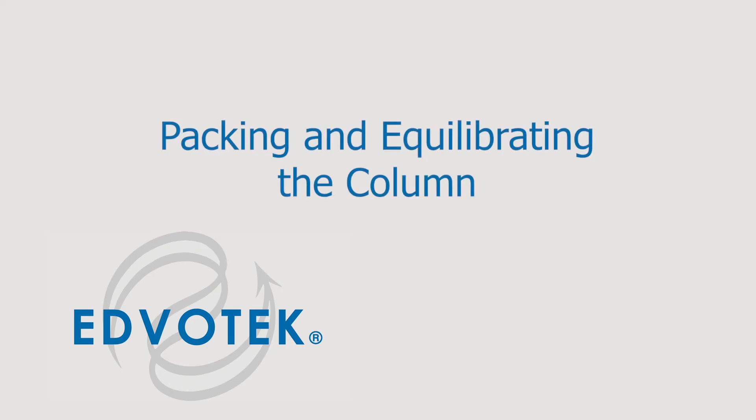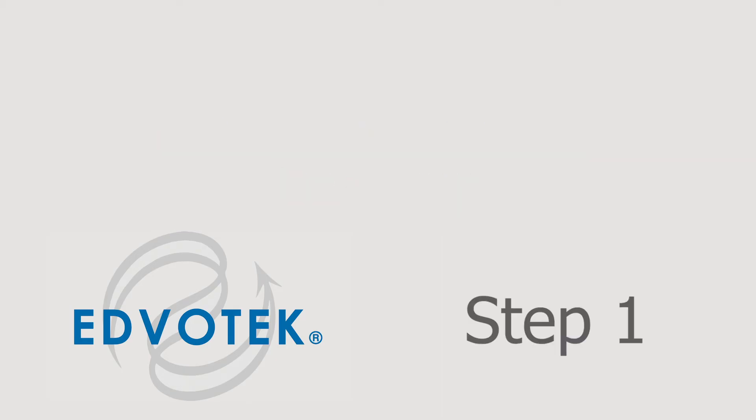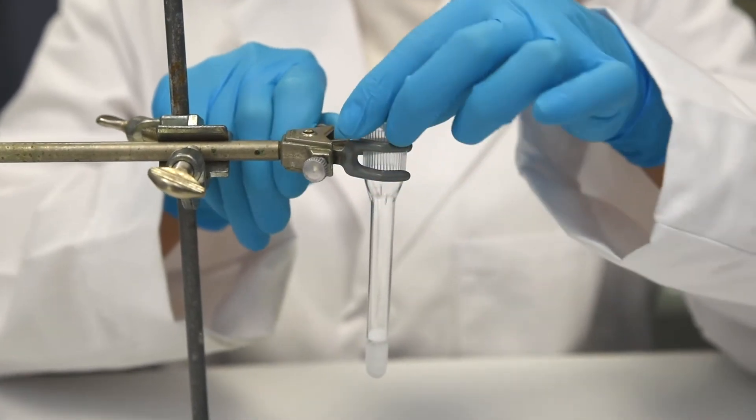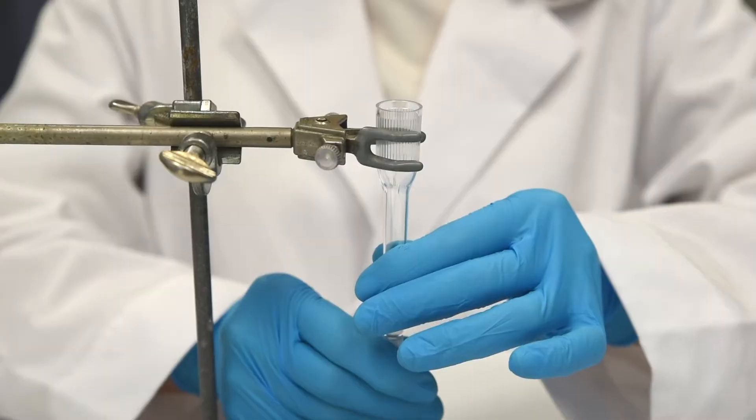Packing and equilibrating the column. Step 1: Vertically mount the column onto a ring stand. Make sure it is straight and that the cap is firmly attached to the bottom of the column.